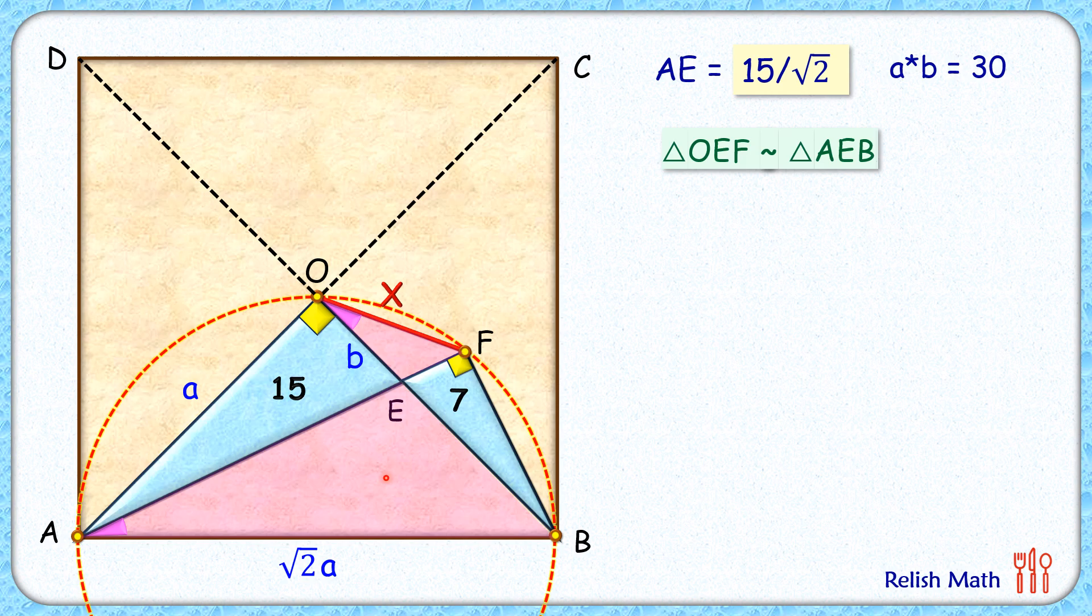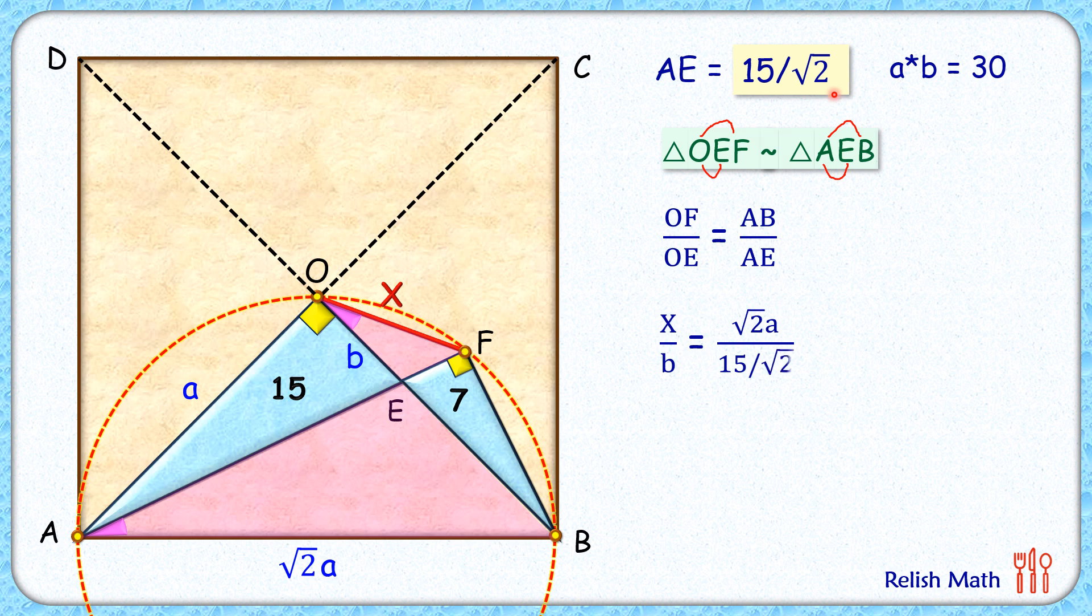As the triangles are similar, the ratio of corresponding sides will be equal. So we can say that OF upon OE equals AB upon AE. Putting the values, OF is x, OE is b centimeter, AB is root 2 times a, and AE is 15 by root 2. Simplifying, we'll get x as 2 times ab upon 15. ab is 30, so x is 60 upon 15, or x is 4 centimeter. And that's our answer.